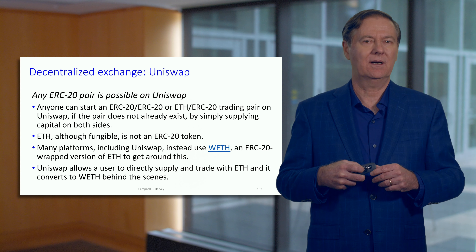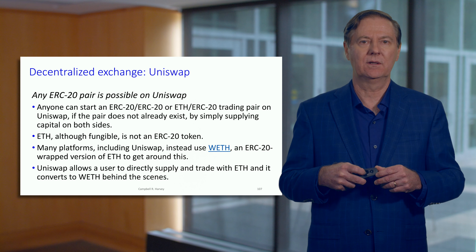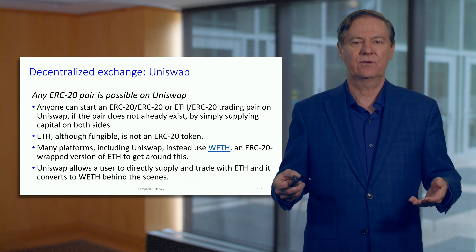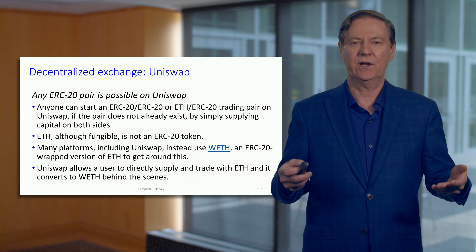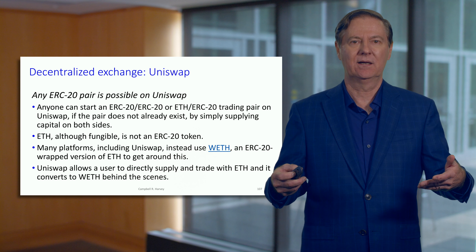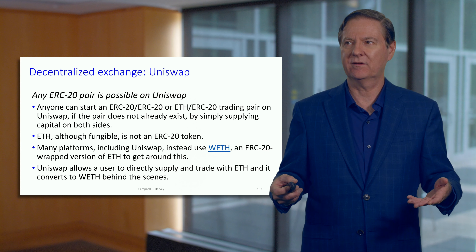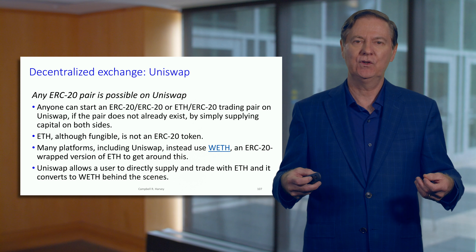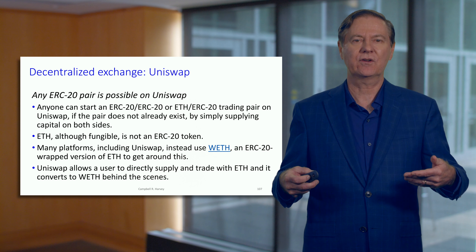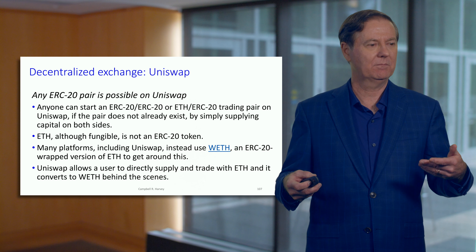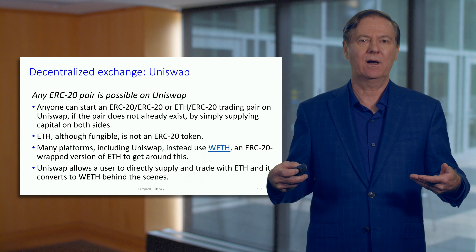Almost any ERC-20 pair is possible on Uniswap. It's super interesting that anybody can start a pair — ERC-20 to ERC-20. If you've got a new token you've introduced, you can seed it in a Uniswap pair and it's instantly available for trade. Think about how difficult it is in traditional finance to get a stock listing — only a very small number of companies can do it and they go through a very costly process. With Uniswap, it's immediate: you create a liquidity pool and it's available for trading on the decentralized exchange.